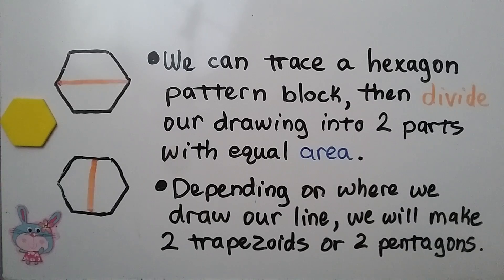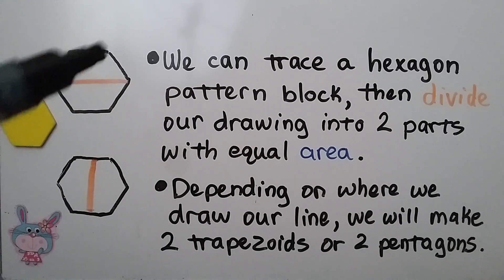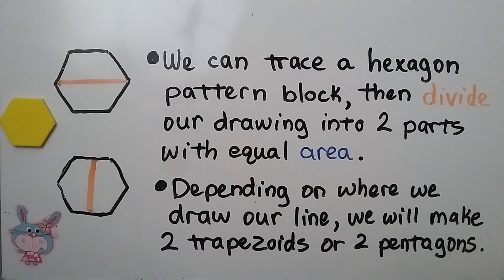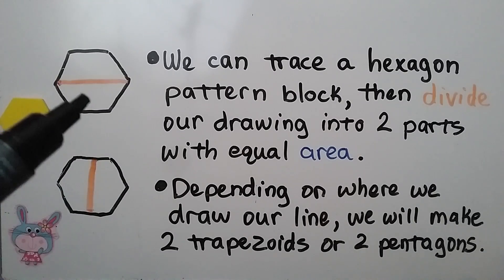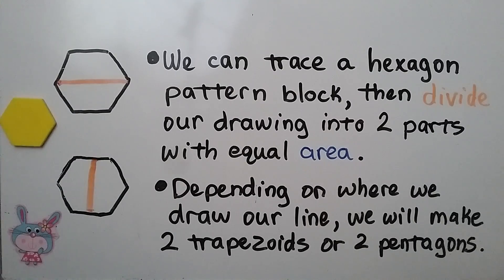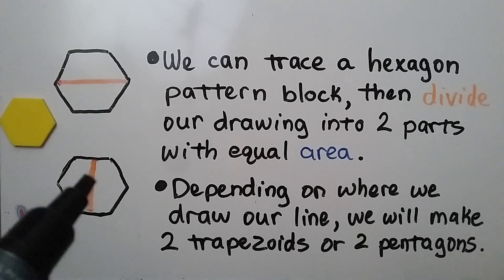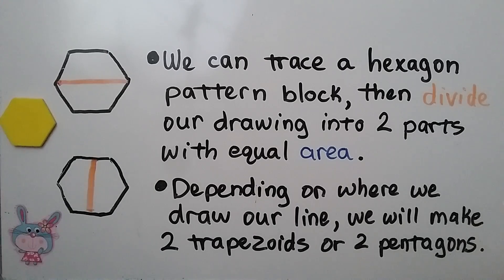We can trace a hexagon pattern block and divide our drawing into two equal parts with equal area. Depending on where we draw our line, we will either make two trapezoids — a trapezoid up here and a trapezoid down here — or we can make two pentagons, each with five sides sharing one side. So depending on where we draw a line, we will make two trapezoids or two pentagons out of that hexagon.